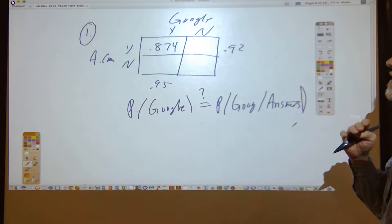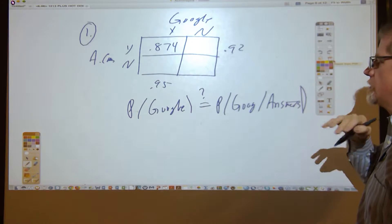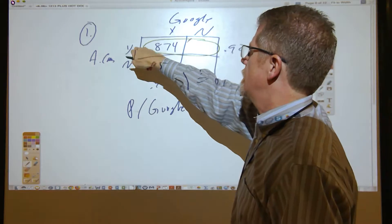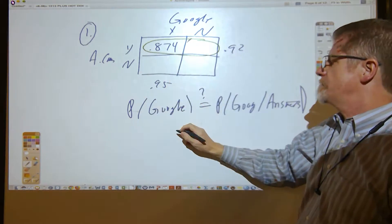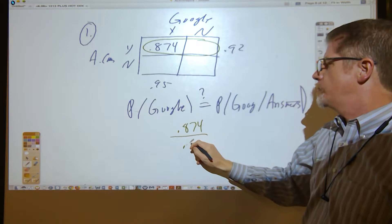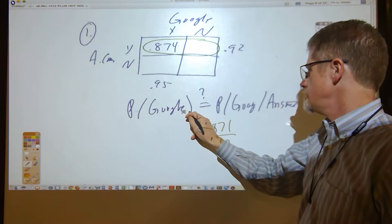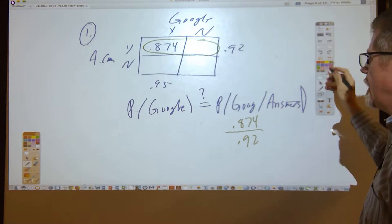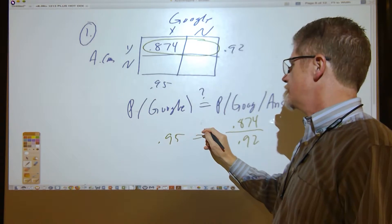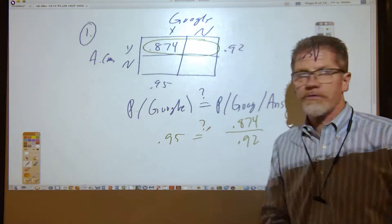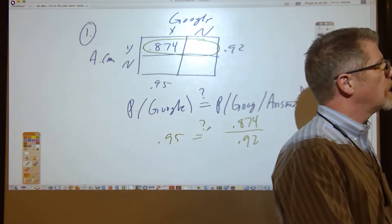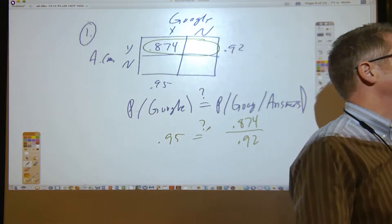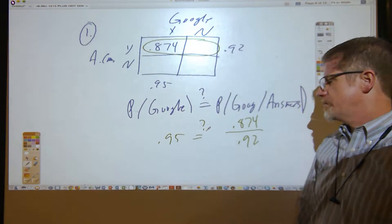So that means you have to shrink it down to Answers.com. Answers.com-yes is really what you need — you don't even have to fill in that number because it's going to be 0.874 divided by 0.92 for the conditional probability. The question is: is that the same thing as the probability of finding it on Google, which is 0.95? So this is the question that has to be answered. Actually, if these are equal, then multiplying both sides by 0.92 gives 0.92 times 0.95 = 0.874. Let's investigate that.